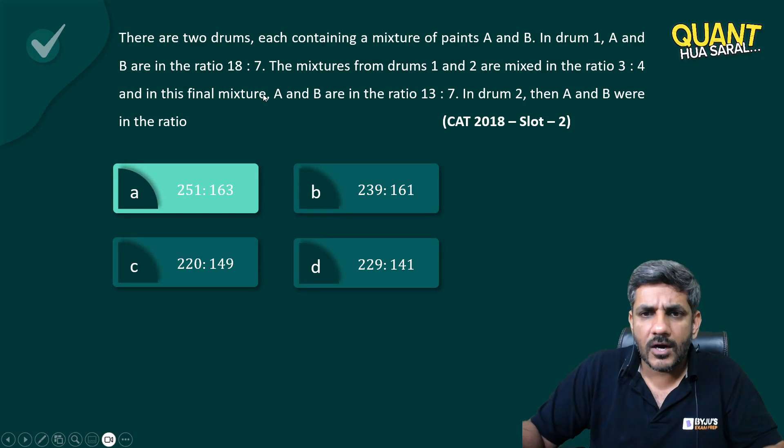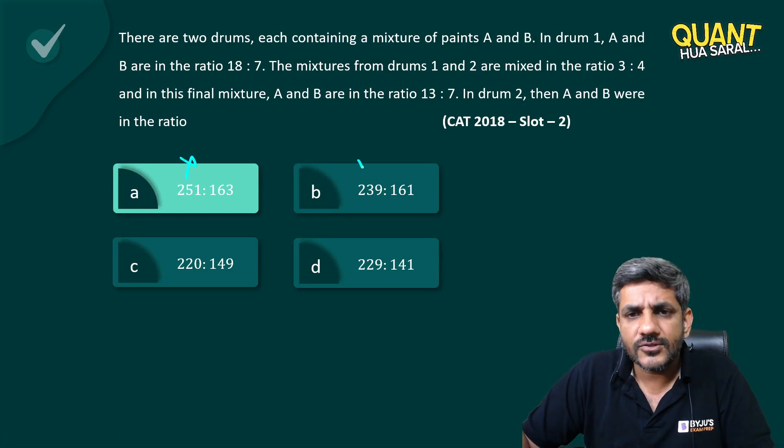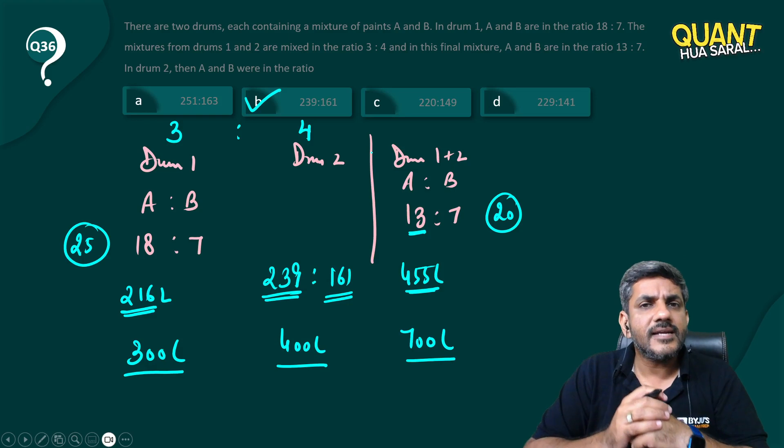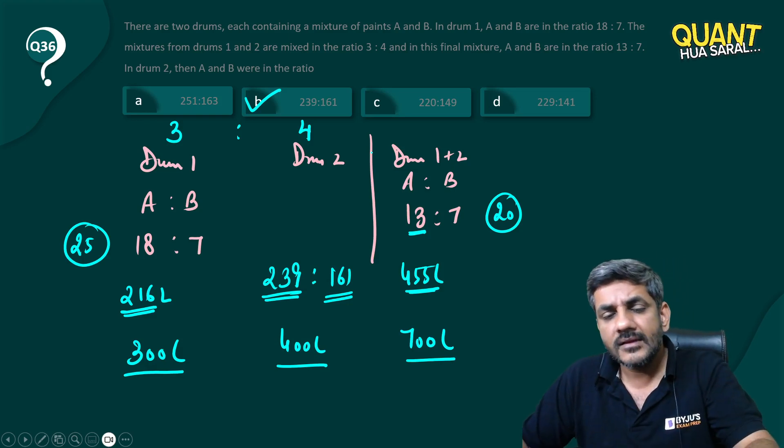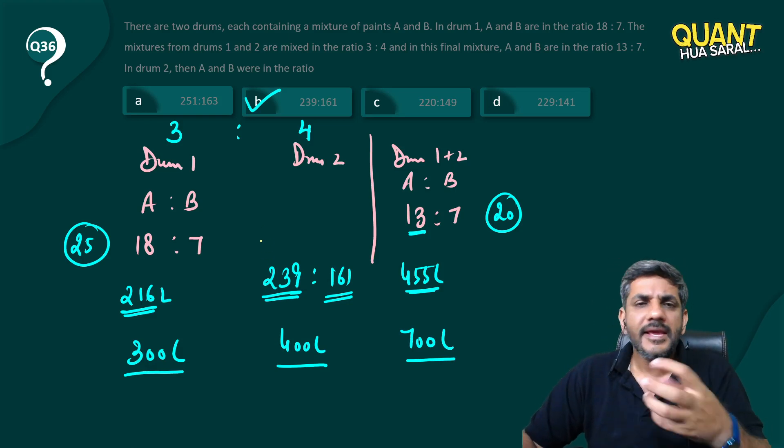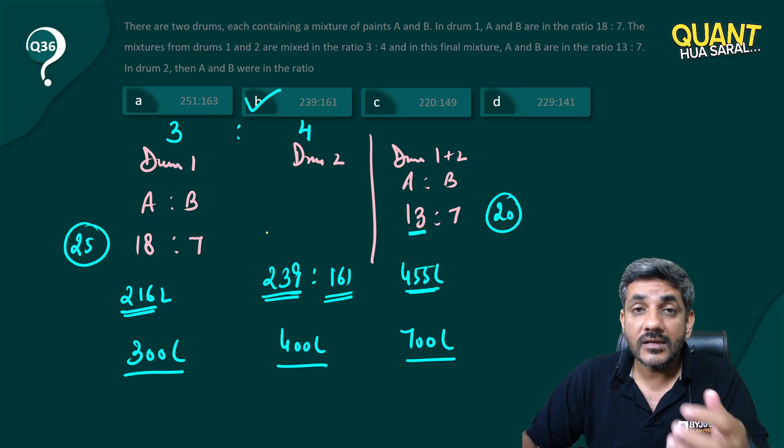Somehow probably I have misquoted it here. It should have been 239:161. Another thing that I want to mention here is would it be easy for me if I work with B? Yes, if you work with B probably it would be easier because calculations would be slightly smaller for you.